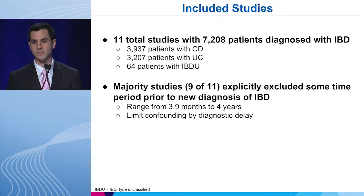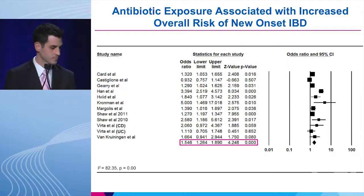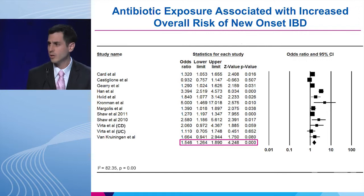In total, we had 11 studies accounting for over 7,000 patients with new diagnoses of IBD — over 3,000 with Crohn's disease and over 3,000 with ulcerative colitis. Importantly, the majority of these studies did account for the potential for diagnostic delay; that is, they omitted a time frame prior to the new IBD diagnosis and did not count those antibiotic exposures, to control for potentially treating yet-to-be-diagnosed IBD.